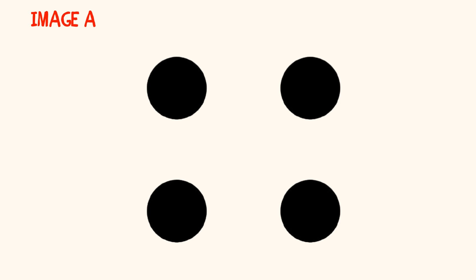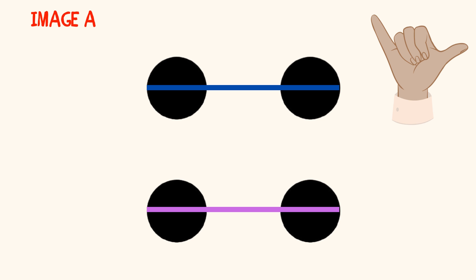One might say, I saw two dots on top and two dots on the bottom, and two plus two makes four. After each share of a strategy, encourage students to show, using this hand signal, if they also saw it that way.